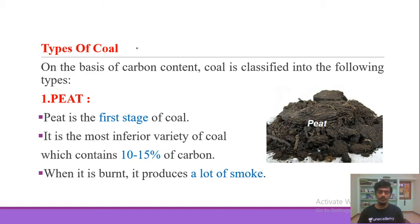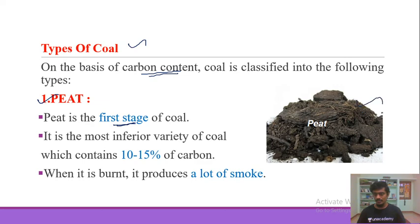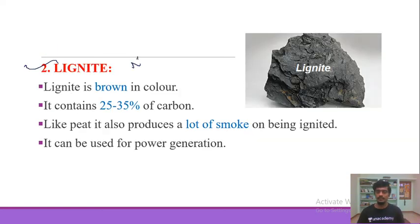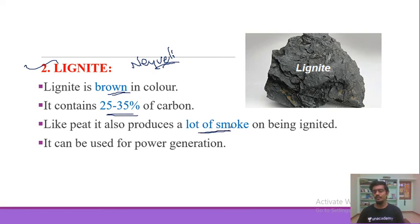There are different types of coal based on carbon content. The first type is peat, which is the earliest and most recent stage of coal formation. Peat contains only about 10–15% carbon and produces significant smoke when burned.